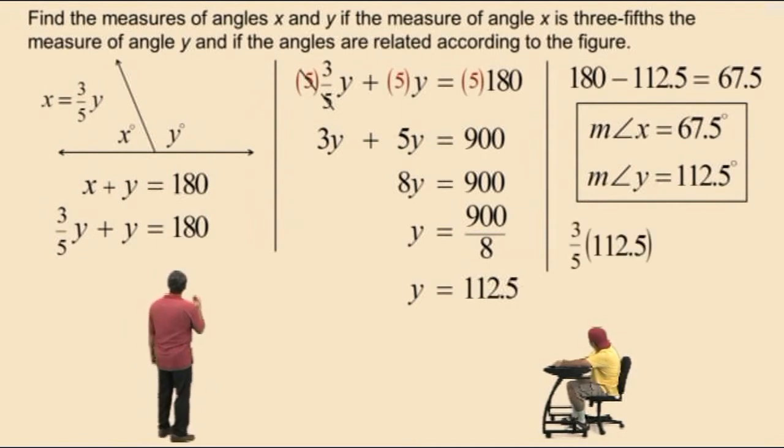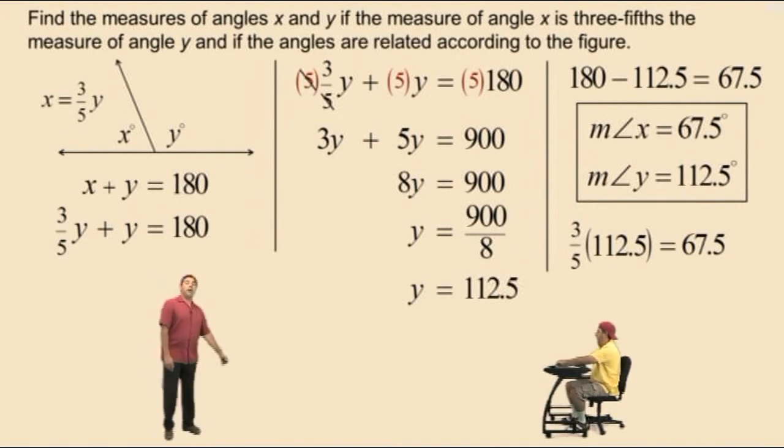So, we'll get 3 fifths times 112.5, which is what, Charlie? 67.5. 67.5. So, we are correct. We'll see you all again soon.